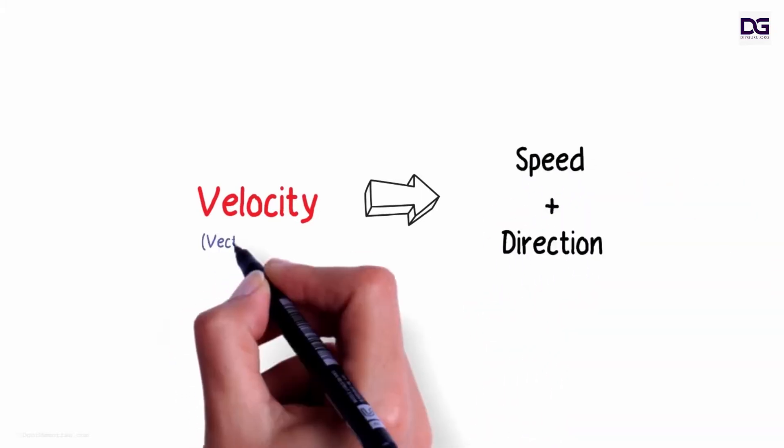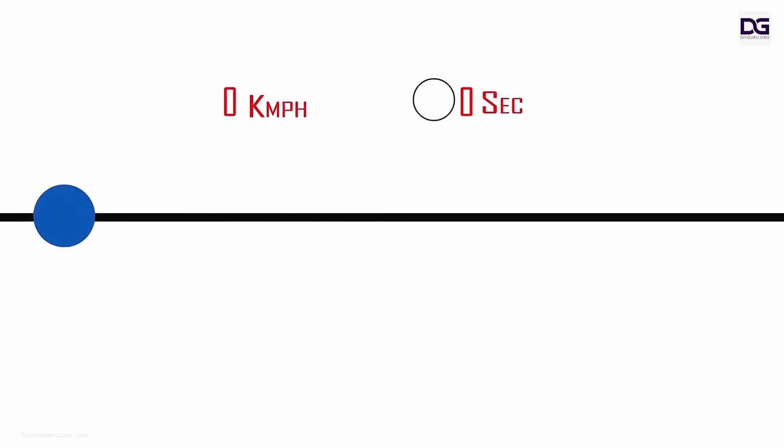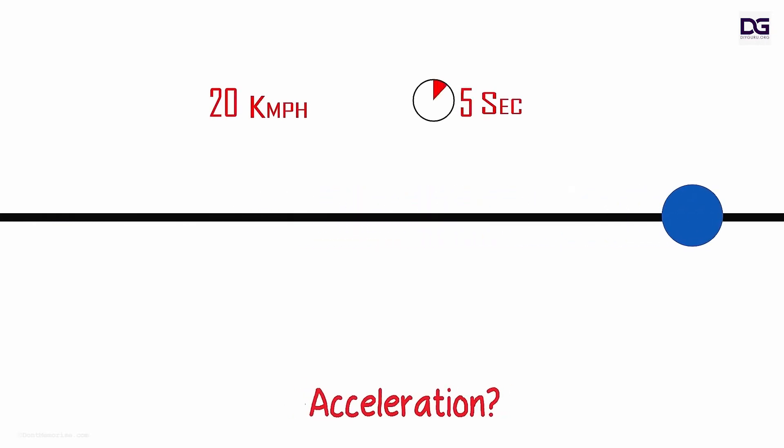Do you remember what velocity is? It's speed with direction, and it's hence a vector quantity. Why is this important? Let's say a body moves from rest and reaches a velocity of 20 kilometers an hour in five seconds. Will acceleration be involved here? Yes, because the velocity is changing. It was zero initially and at the end of five seconds it's 20 kilometers per hour.